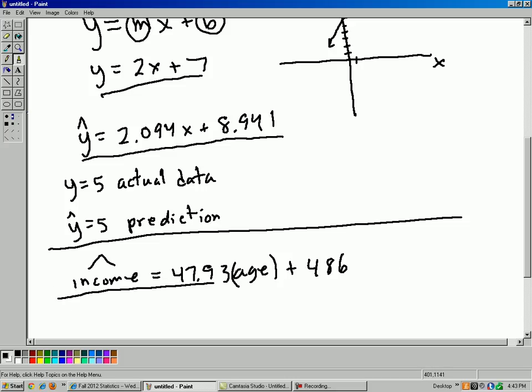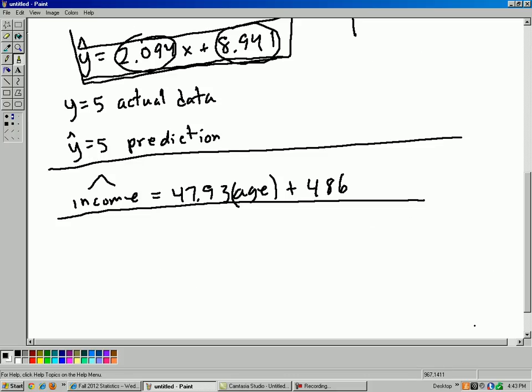Now, there's one more difference that is particular to this textbook here. The y intercept comes before the slope. So instead of y equals 2.094x plus 8.941, you would write it out as y hat equals 8.941 plus 2.094x. There's no particular reason. It's just this author wanted to put the y intercept first and then the slope second.